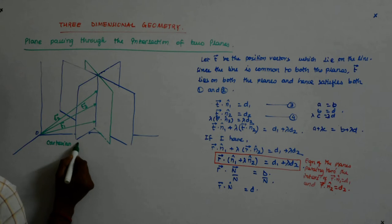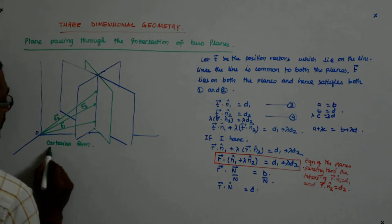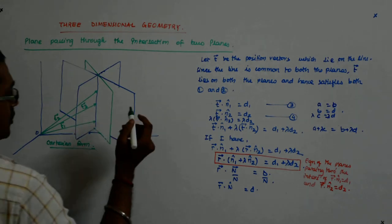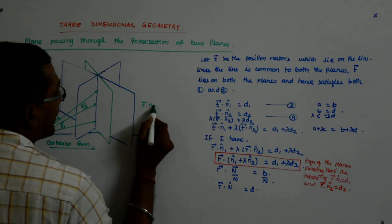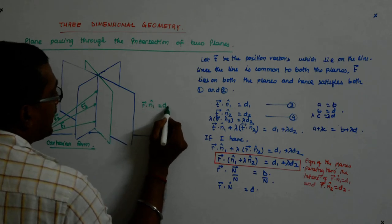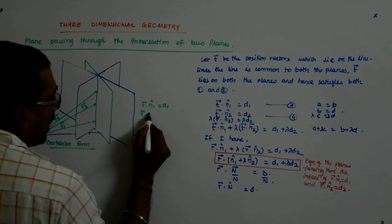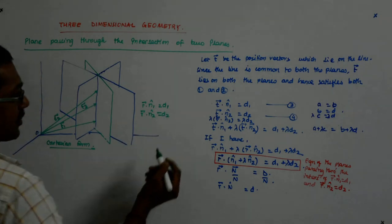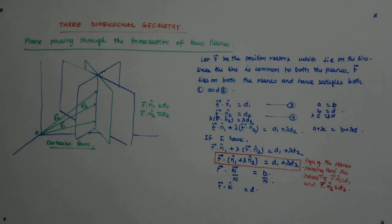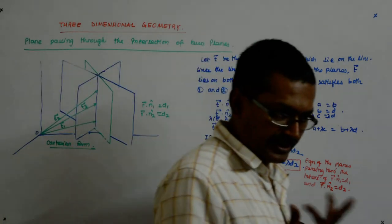For that, Cartesian form, for that I had the two. I raised that. R dot N1 cap is equal to D1 was the first equation. R dot N2 cap is equal to D2 was the second equation. This is what we were manipulating in the vector form.